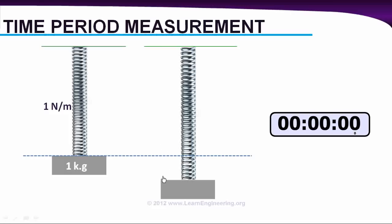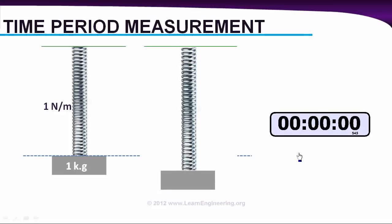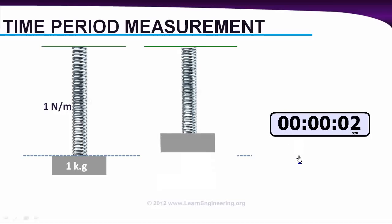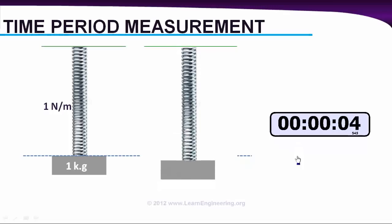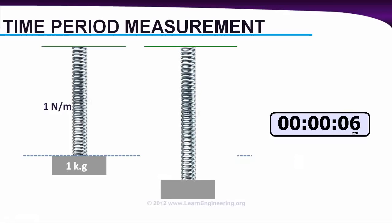The time required for this travel is known as the time period. In this experiment, we'll measure the time period of the system. We have a timer over here, so let's start the experiment. I'm releasing the mass and measuring the time. It's going up, reaching the top position, now coming back. It says the time period of the travel is around 6.28 seconds.